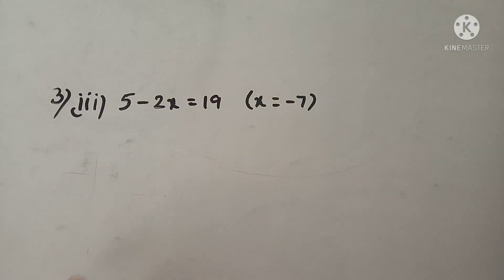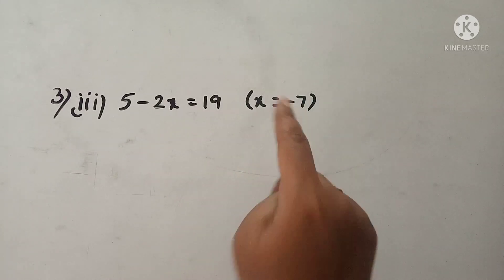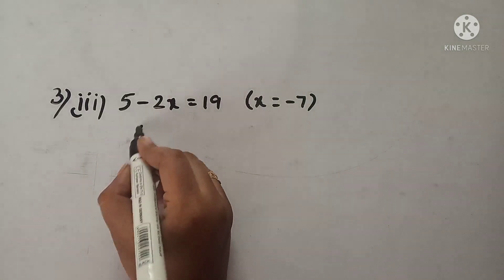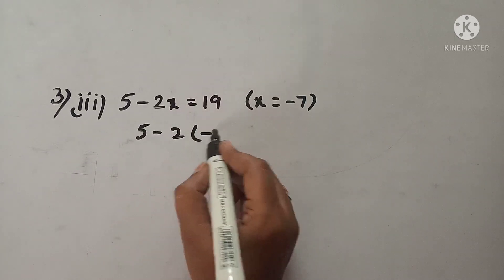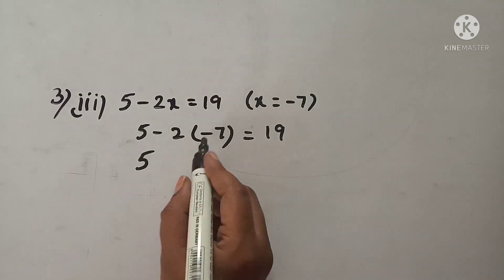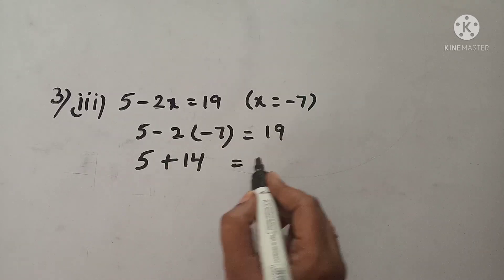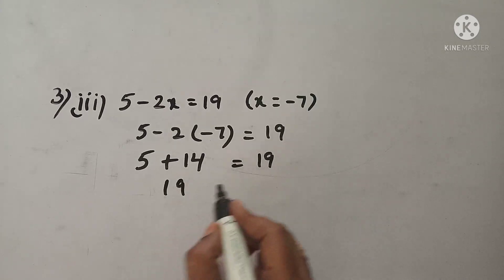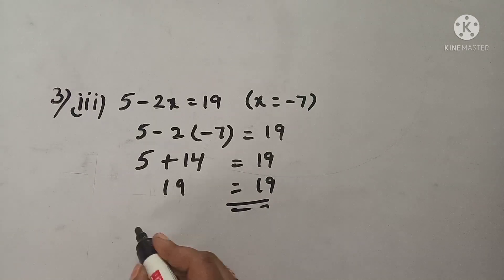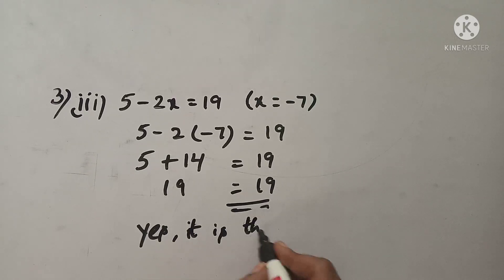Let's see the third one: 5 minus 2x is equal to 19 and x value is given as minus 7. Substitute minus 7: 5 minus 2 into minus 7, minus into minus gives plus, so 5 plus 14 is equal to 19. LHS is equal to RHS, so this is the solution of that equation.